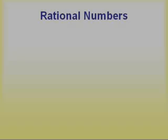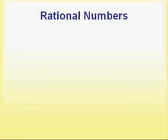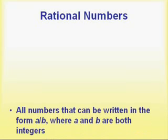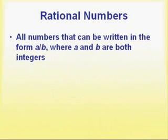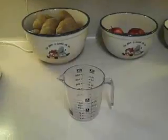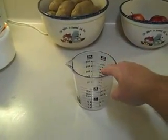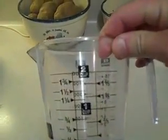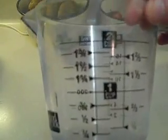These we're going to call the rational numbers. We define a rational number as any number that can be written in the form A over B, where A and B are both integers. These numbers include negative one-half, five over one, three over eight, fifteen over seven. We find fractions everywhere — a simple measuring cup contains fractions listed on the side, recipes have fractions everywhere, and even a pack of Velveeta cheese has fractions on the outside.